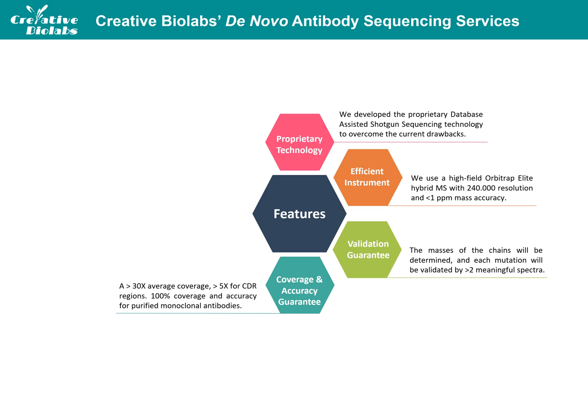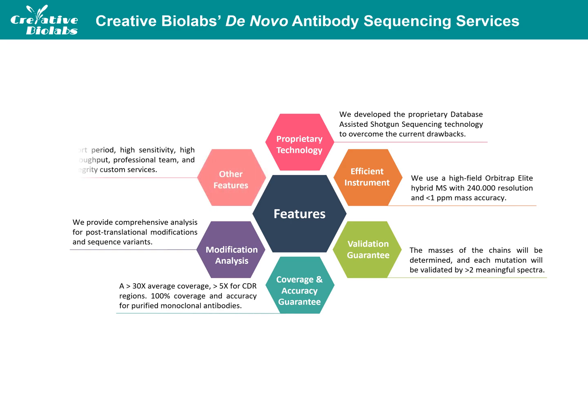For CDR regions, the coverage will be at least 5x. Each amino acid of the variable regions is supported by strong mass spectrometry signals in at least 3 distinct peptides. Purified monoclonal antibodies in multivalent forms can be sequenced with 100% coverage of the desired regions as well as 100% accuracy. We combine quantitative and qualitative information and provide comprehensive analysis for post-translational modifications and sequence variants. Additional features including short turnaround period, high sensitivity, high throughput, professional team, and one-stop custom service are also reflected in our de novo antibody sequencing services.